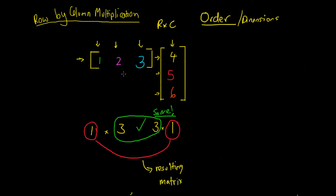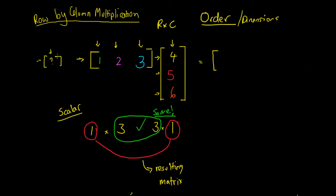Let's go ahead and actually multiply this matrix. We know we can do it because the inner numbers are the same, and we're going to get a one by one matrix. A one by one matrix is what we call a scalar quantity — that just means after all the multiplication, we end up with one row and one column, so it's basically just one number. That's a fancy term for one constant number.